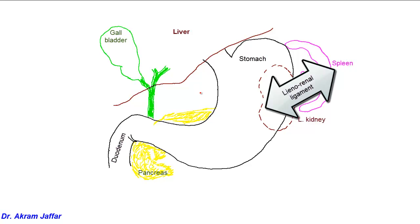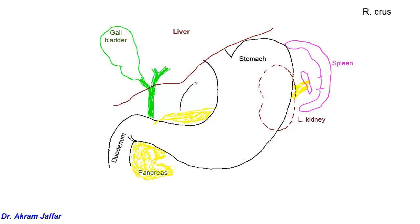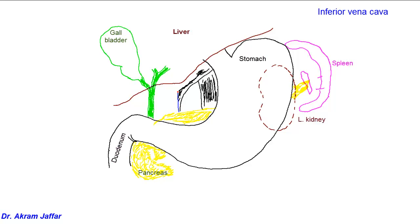Now, to continue the view, I will draw the crura of the diaphragm. This is the site of the right crus of the diaphragm — it passes toward the esophagus, which passes through the right crus of the diaphragm. This is the left crus of the diaphragm — muscular fibers of the diaphragm. The right crus of the diaphragm is crossed anteriorly by the inferior vena cava. The inferior vena cava is a big vessel located posteriorly and to the right. Here it is crossed by the portal vein, so let's draw the portal vein.